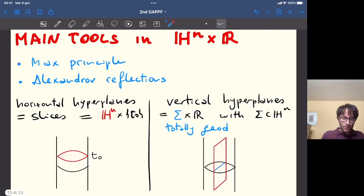Now, the two tools are available also in our ambient space. I recall you once more that the ambient space is the product between the hyperbolic space and the line. And so, the first tool, the maximum principle, works without much effort because it is essentially a PDE factor. It does not really depend on the geometry of the ambient manifold.